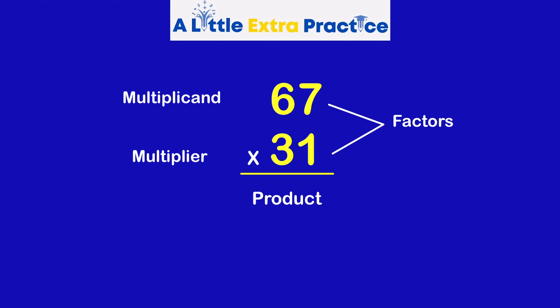Looking at a multiplication problem, we have a couple names. The top number is a multiplicand. I'm going to refer to it as a top number. We have the multiplier on the bottom. The two numbers together are the factors. When we do a multiplication problem, the numbers are the factors. The answer is called the product.